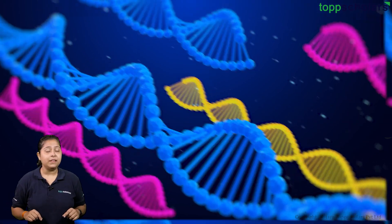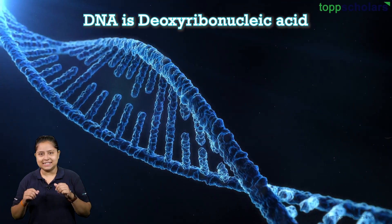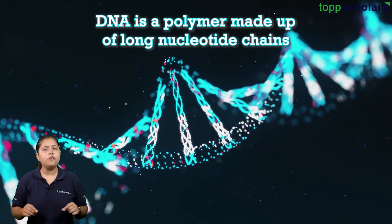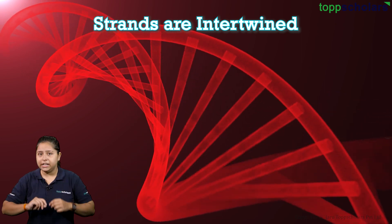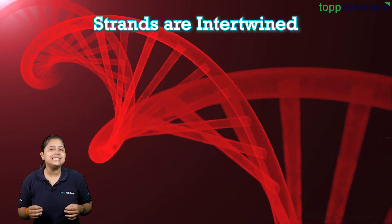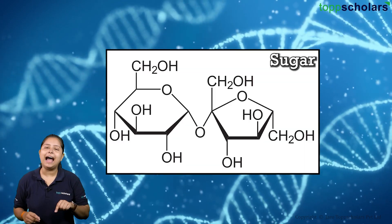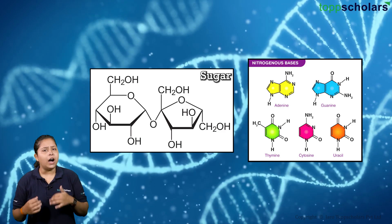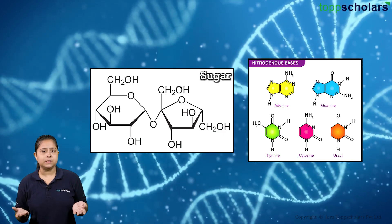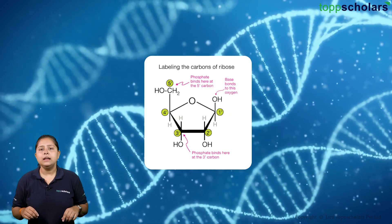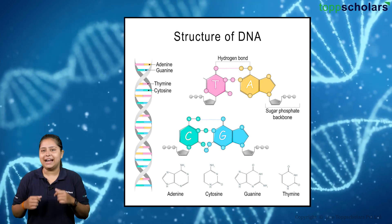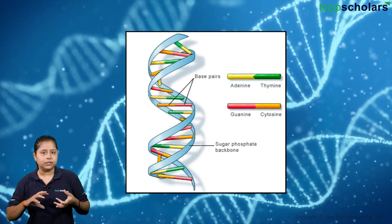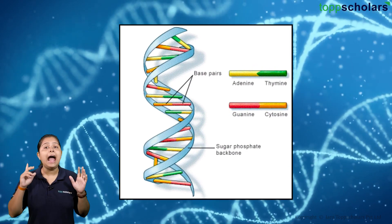Now let's see the structure of DNA. DNA is deoxyribonucleic acid — a polymer made up of long nucleotide chains. It is a double helix where two strands are intertwined with each other, forming this kind of beautiful twisted ladder shape. The nucleotides are made up of nitrogen bases, sugars, and phosphate groups. Since we have carbon atoms in the sugar as well as in the nitrogen bases, we will write 1', 2', 3', etc. to differentiate the sugar's carbons from the base's carbons. The sugar and phosphate bind together to form the backbone of DNA, which is anti-parallel.